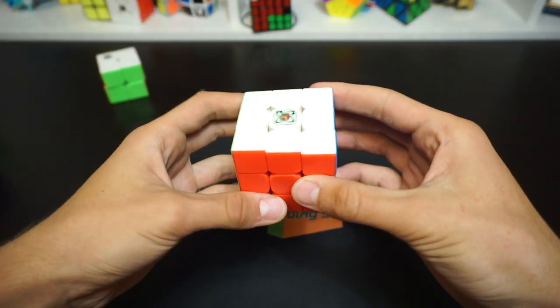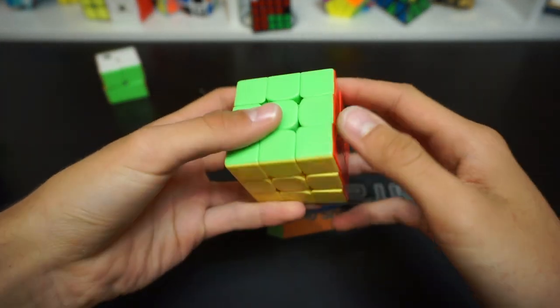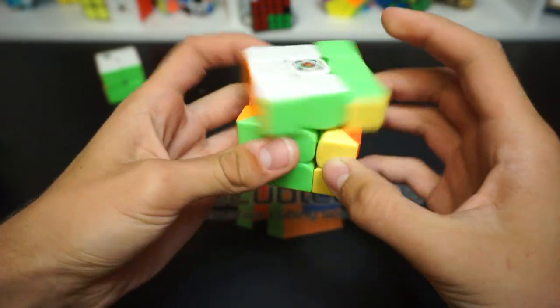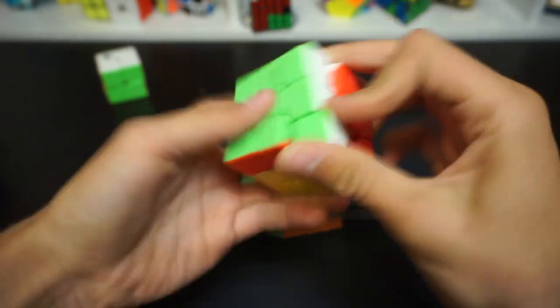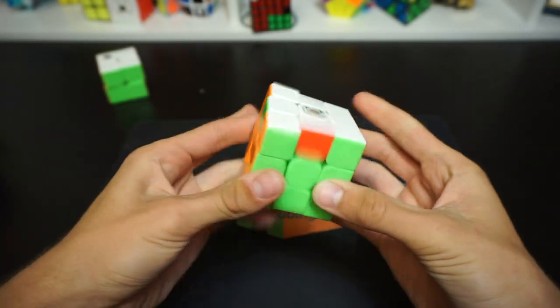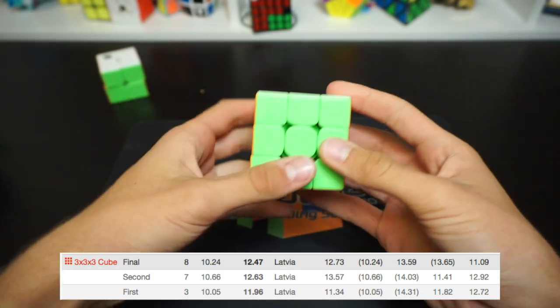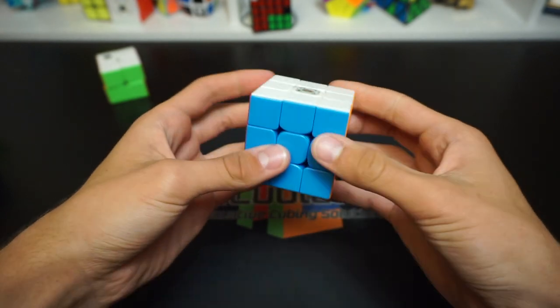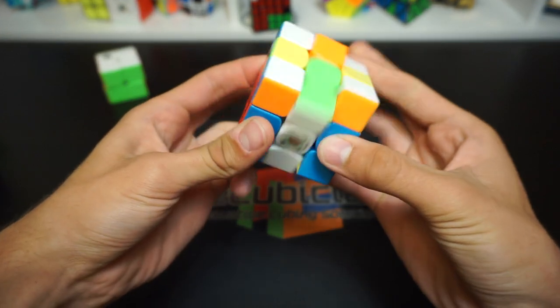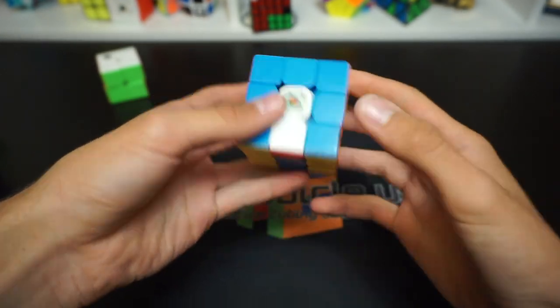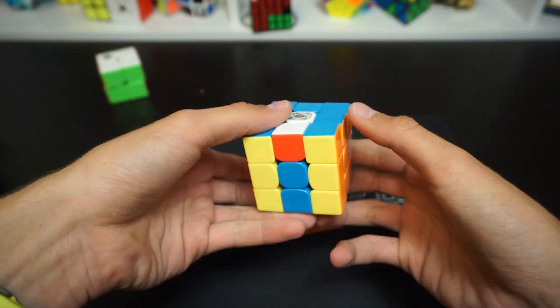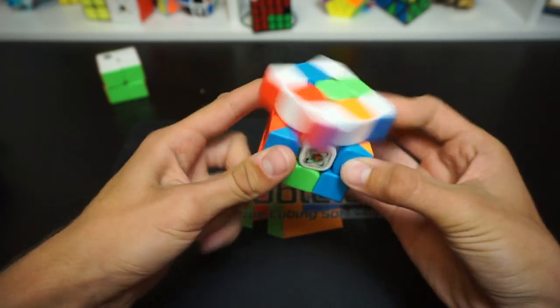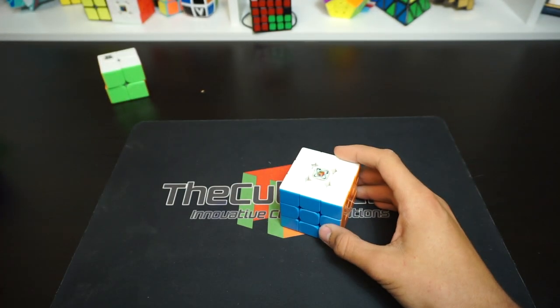Next up is 3x3 and I'll be using the trustworthy Weilong, the Cubicle Labs Weilong GTS2 Magnetic Light. I cleaned this thing up so now it's seriously the beast. In Seagulled Open I didn't achieve the 11.5 average I was hoping for, although that was only because I was under the pressure of the whole competition organizing and I didn't have time to warm up. I hope I get it in Estonian Open because I am looking forward to the competition so much.